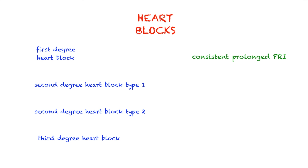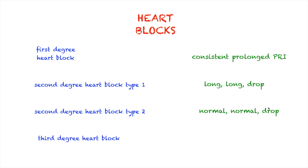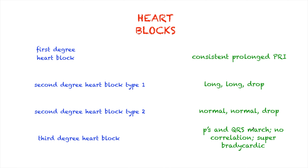As a review: first degree heart block would be consistent prolongation of your PRI. Second degree heart block type 1 would be 'long, long drop,' where your PRI gets longer and longer and then your QRS drops. Second degree heart block type 2 would be 'normal, normal drop,' where the PRI stays normal until the block takes place and the QRS complex drops. Third degree heart block: your P waves and QRS march, but there is no correlation — and usually they're super bradycardic.